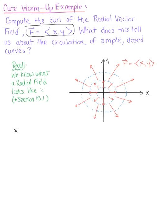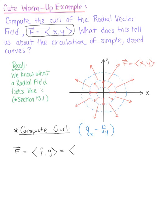Let's confirm that by calculating our curl. From Green's theorem, the curl is equivalent to the partial derivative of G with respect to x minus the partial derivative of F with respect to y. Given the radial field in the plane with components (x, y), the partial derivative of F with respect to y is zero, and the partial derivative of G with respect to x is zero. Therefore, the curl is zero minus zero, which is zero.